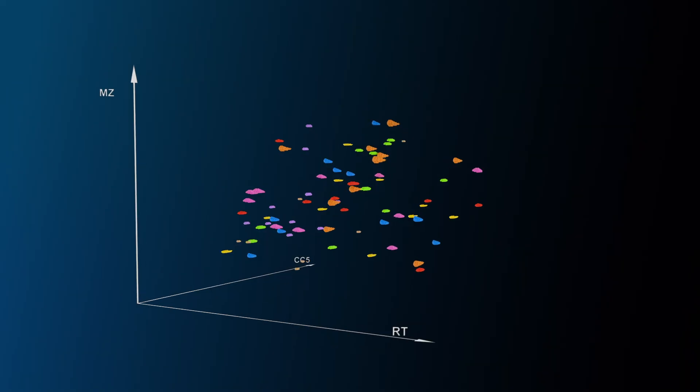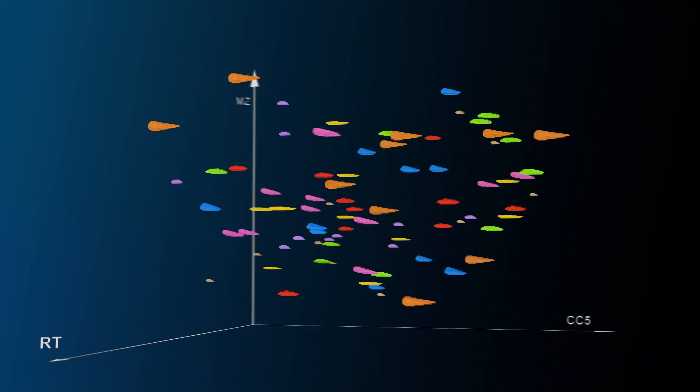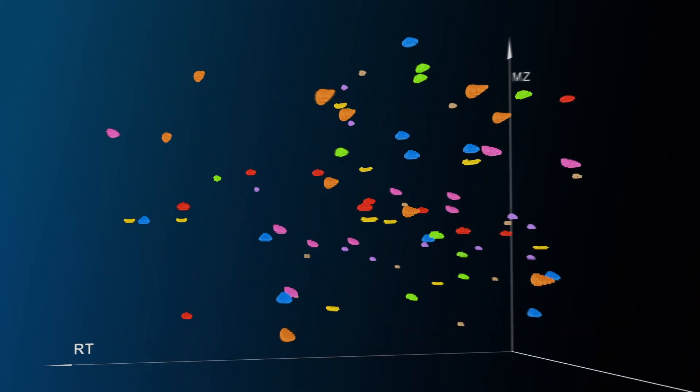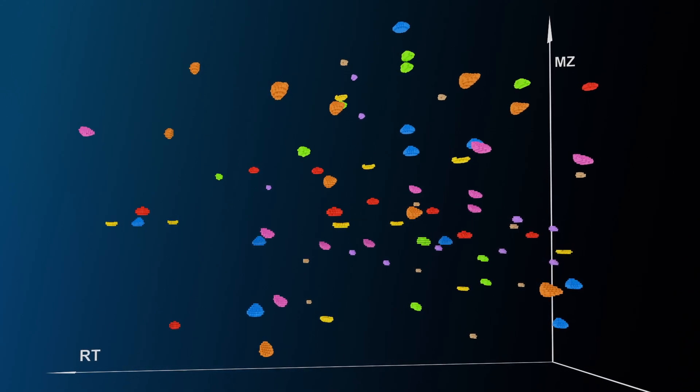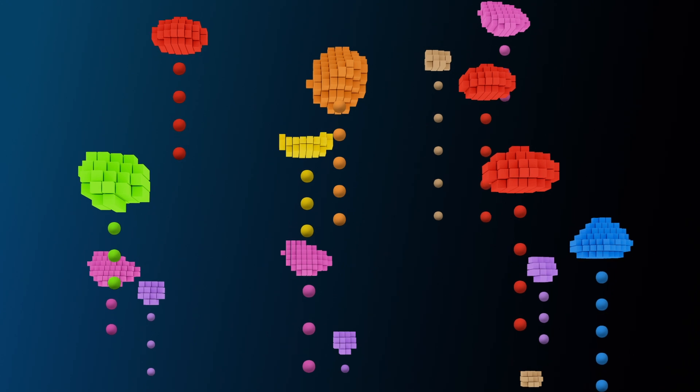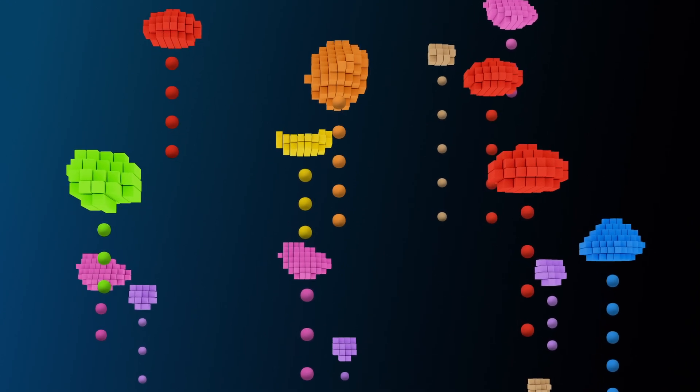We tested the timsTOF MET in Bremen when it was still under development. We brought samples from inborn errors of metabolism where you have isomers — we could separate two isomers which are so relevant for diagnosis: one for disease one and one for disease two. That was a very nice case where we could show that the ion mobility was useful.